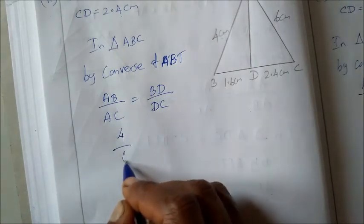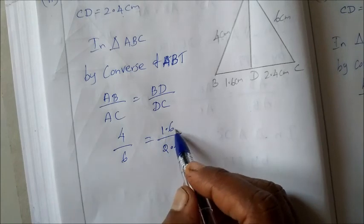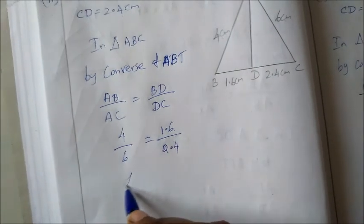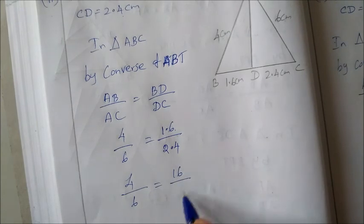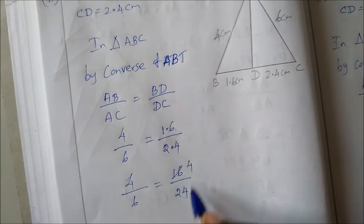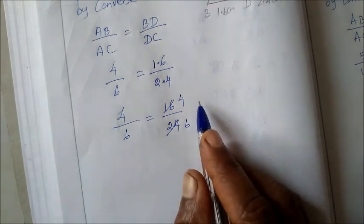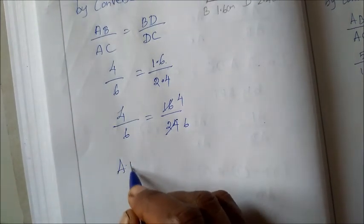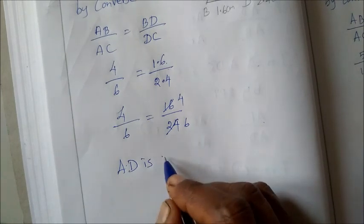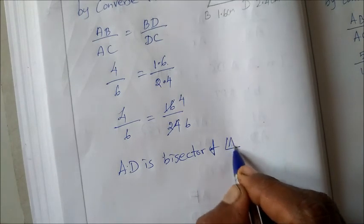4 divided by 6 equal to 1.6 divided by 2.4. To remove the decimal, multiply by 10 divided by 10, giving 16 divided by 24. Simplifying using the 4 times table: 4 by 6 equal to 4 by 6. Therefore, AD is the bisector of angle A.